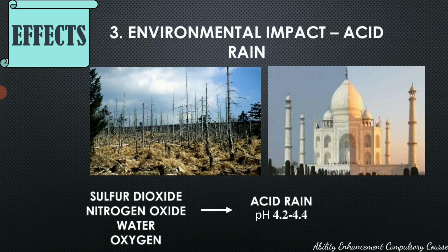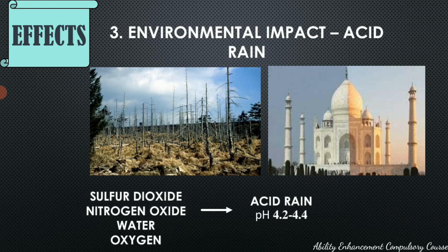Acid rain is another impact, wherein precipitation contains very high levels of nitric acid and sulfuric acid. Sulfur dioxide and nitrogen oxide present in the atmosphere combine with water and oxygen to form these acids, which come down as acid rain. Regular rainwater has a pH of about 5.6, but acid rain can have a pH as low as 4.2 or even 3. Acid rain has a strong corrosive effect on human skin, vegetation, animal skin, and building materials.